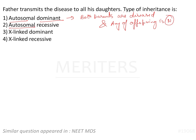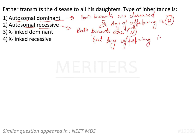For autosomal recessive, the identifier statement is: if both parents are disease-free — normal — but any offspring is diseased, then we consider that to be autosomal recessive.